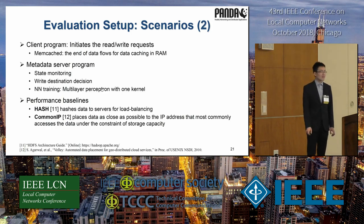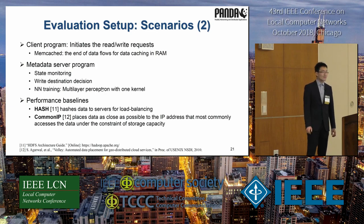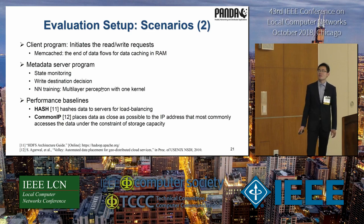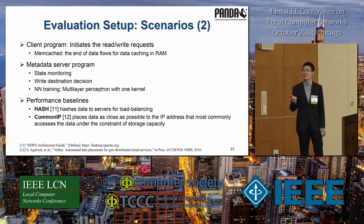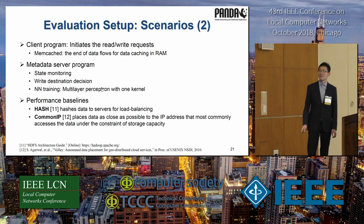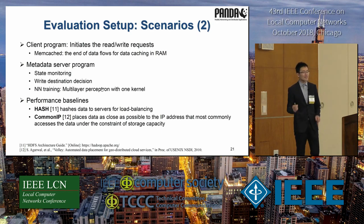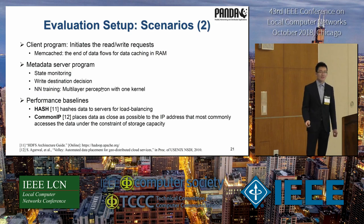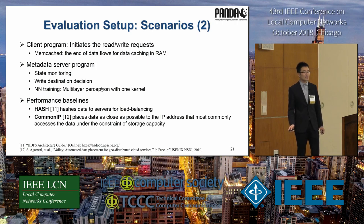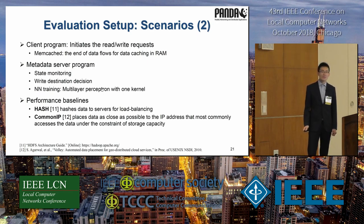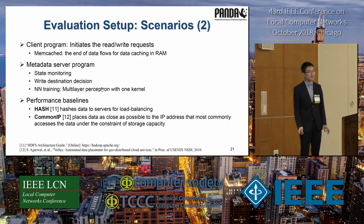The client program is implemented on each storage server, initiating read-write requests according to the traces. To improve efficiency of intensive data flows, a memory caching module caches data items in RAM. The metadata server program handles control flows with modules including state monitoring, write destination decision, and neural network training. Two baselines, Hash and CommIP, are introduced for fair performance comparison. Hash is essentially random data placement for load balancing, widely used in distributed storage systems such as HDFS and Cassandra. CommIP places data as close as possible to the IP address that most commonly accesses them under storage capacity constraints. Both are heuristic solutions.